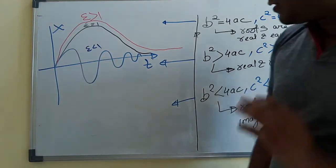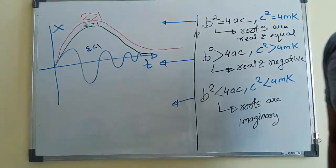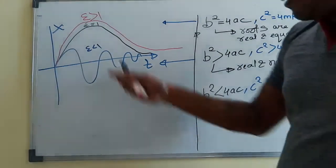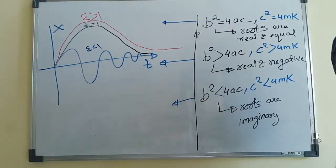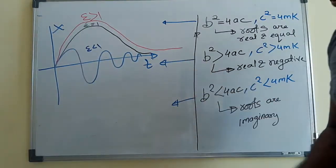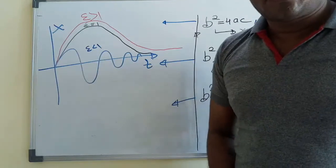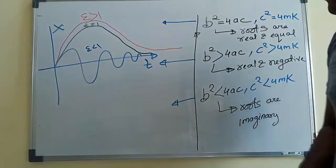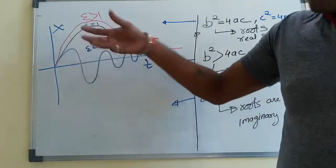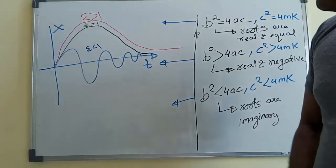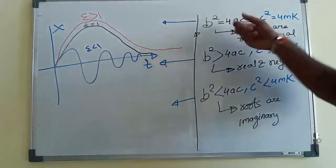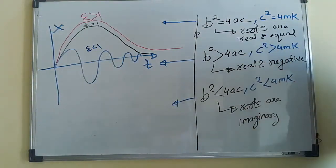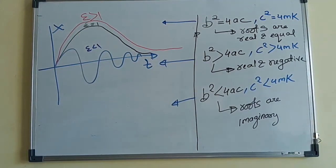I think this is clear to everyone. In the next lecture, we will discuss practical examples of critically damped, over damped, and under damped conditions, which are asked in external examinations. After the concept of zeta and practical examples are clear, we will proceed with deriving the value of zeta for these three cases, which are important from the numerical point of view. Thank you.